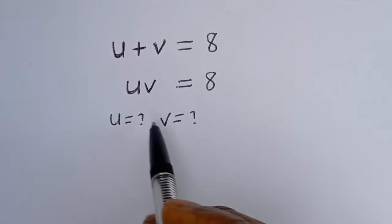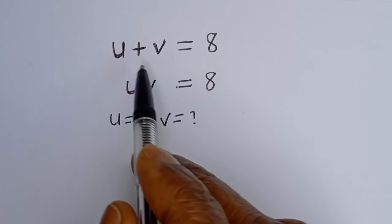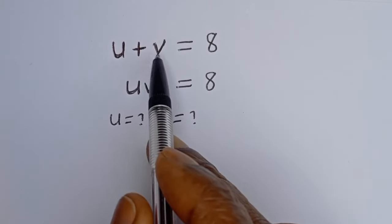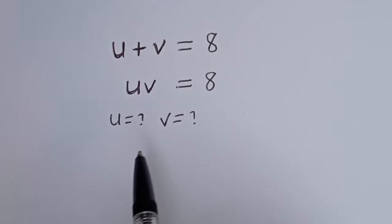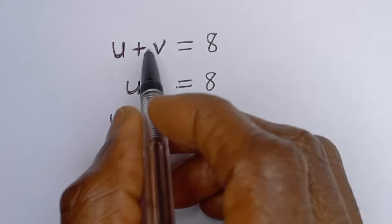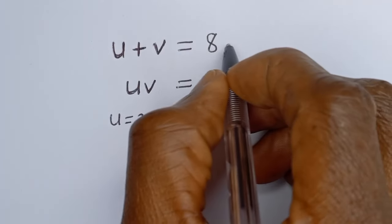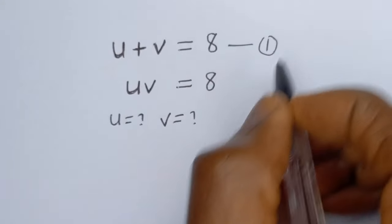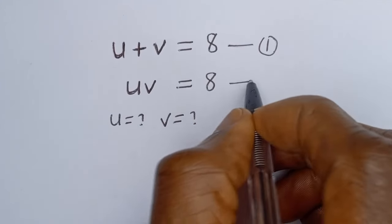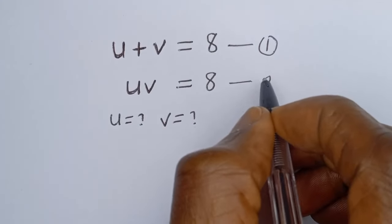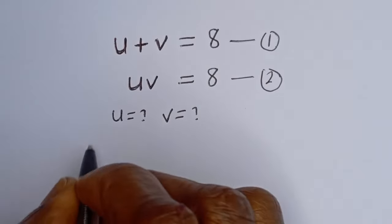Hello. How to solve for u and v in this equation: u plus v is equal to 8 — let's call this equation 1 — and uv is equal to 8 — let's call this equation 2.